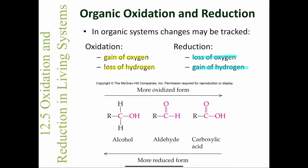Looking at the oxidation process from left to right, we start with our primary alcohol. When we oxidize a primary alcohol, we produce an aldehyde by the loss of two hydrogen atoms and the formation of a double bond between the carbon and the oxygen. An aldehyde can be further oxidized by the gain of oxygen, converting the aldehyde into a carboxylic acid.